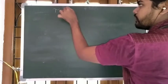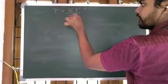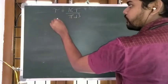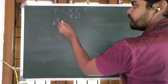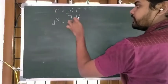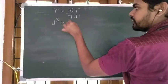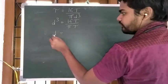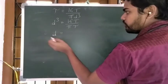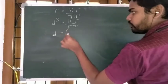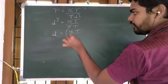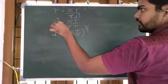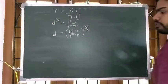From tau equals 16T divided by pi D cube, rearranging gives D cube equals 16T divided by pi times tau. Therefore D equals (16T divided by pi times tau) to the power of one-third.